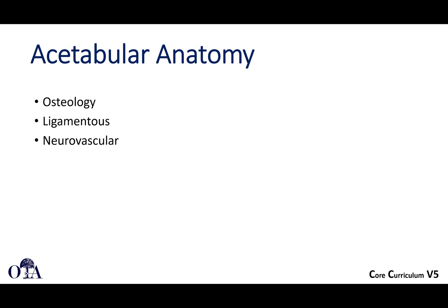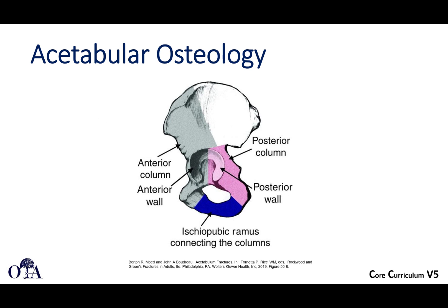We already discussed the pelvis osteology, muscular, ligamentous, and neurovascular anatomy, and now we're going to shift a little bit to acetabular anatomy. We're still in the pelvis, but we're going to focus more on the acetabulum because acetabulum fractures are generally treated as a somewhat separate topic and the anatomy can be a little bit confusing, especially when you start talking about articular injuries and the need for reduction. It's very important to have a good understanding, and there's some schemes here that are important to understand, namely this column concept.